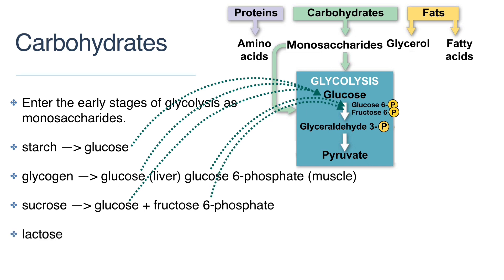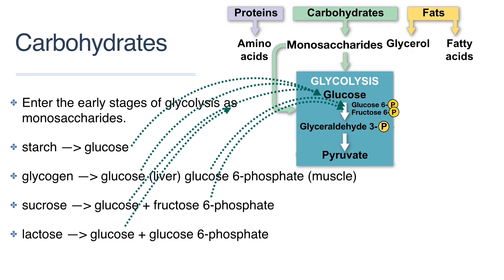Lactose, or milk sugar, is a disaccharide whose hydrolysis produces glucose and galactose. The glucose enters at the start of glycolysis and the galactose is phosphorylated and converted into glucose-6-phosphate before it can enter glycolysis.